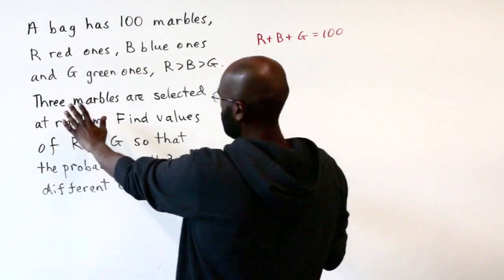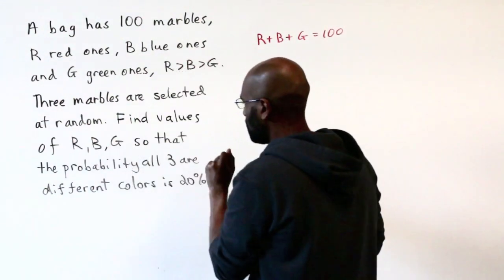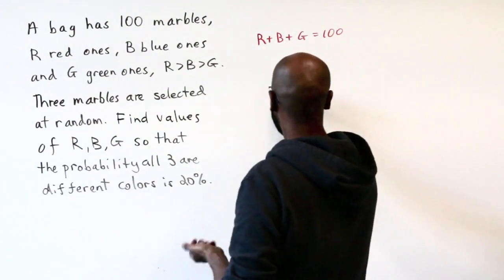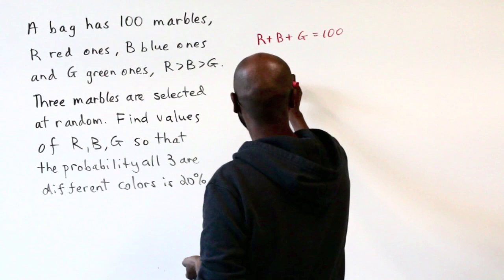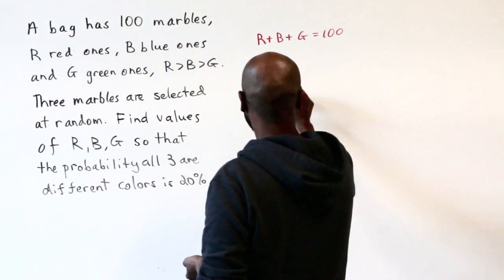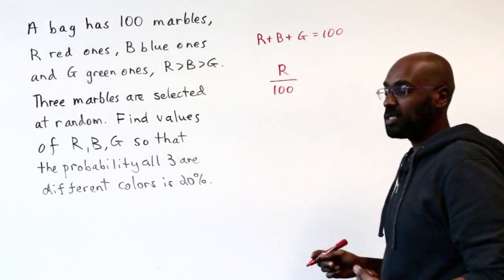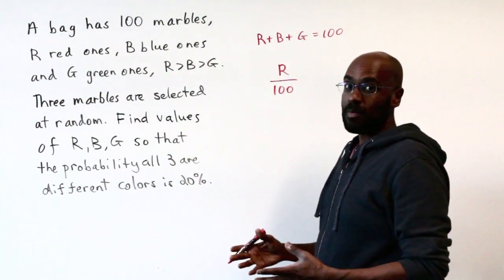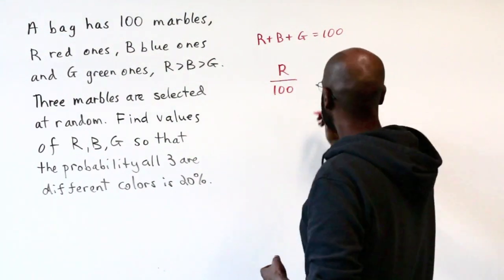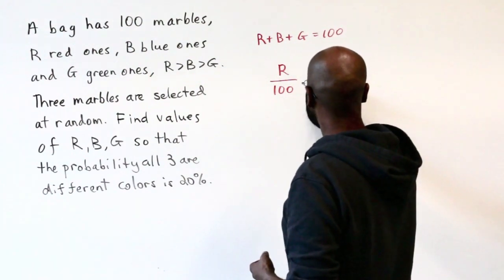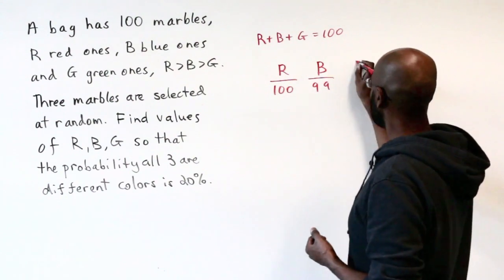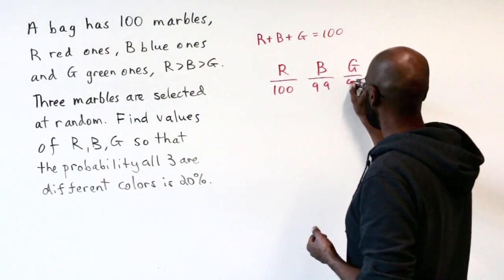Now let's work with this probability. You pick three marbles at random, what's the probability that all three are different? Let's say you chose a red marble first. The probability of selecting a red marble is R over 100. Now you have 99 marbles left. The probability of the next one being blue is B over 99, and then the subsequent last one being green is G over 98.